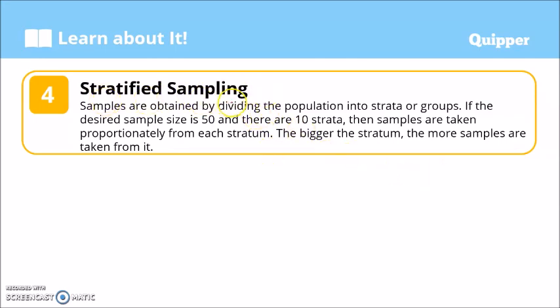Again, sampling technique: systematic random sampling. Next one, we have stratified sampling. Samples are obtained by dividing the population into strata or groups. If the desired sample size is 50 and there are 10 strata, then samples are taken proportionately from each stratum. The bigger the stratum, the more samples are taken from it. Example of this: if you want to conduct a research in a school, with different grade levels - grade 7, grade 8, up to grade 10, or maybe up to grade 12 - if you are going to group them into grade levels, those are your strata already. So if you take 50, your sample size is 50, it should be proportionate to the number of population in each grade level. I'll show you an example.